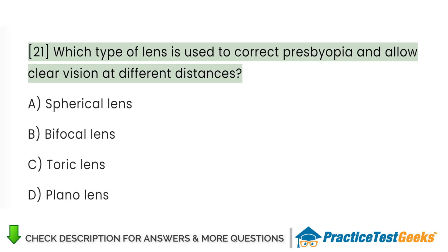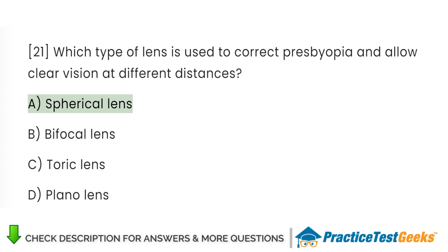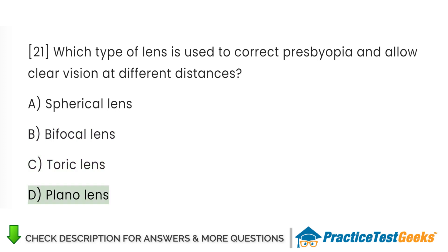Which type of lens is used to correct presbyopia and allow clear vision at different distances? A. Spherical lens. B. Bifocal lens. C. Toric lens. D. Plano lens.